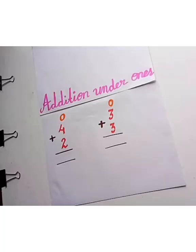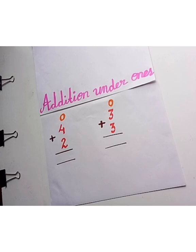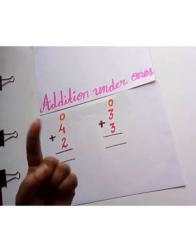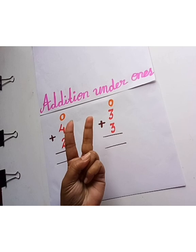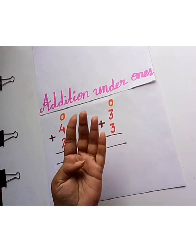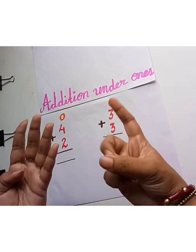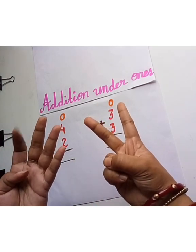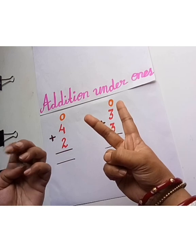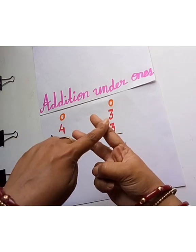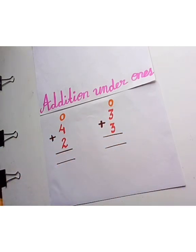Children, now let's add using fingers. Let's do another sum using fingers. 4 — 1, 2, 3, 4 — and then 2. Let's count: 1, 2, 3, 4, 5, 6. So we will write here 6.